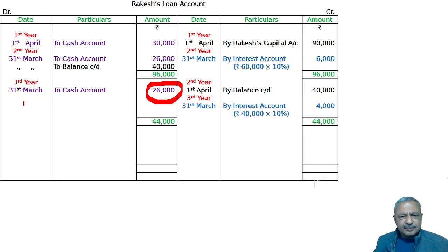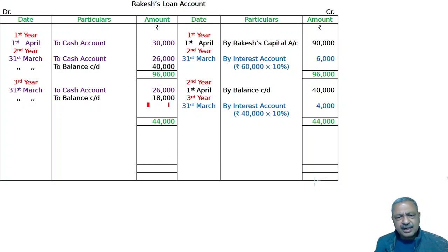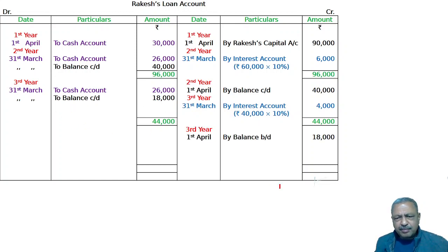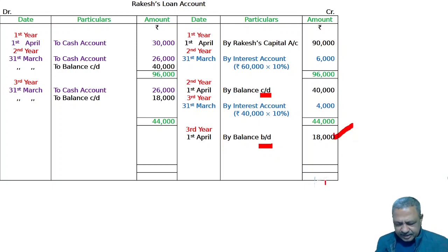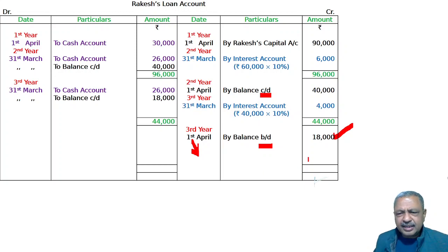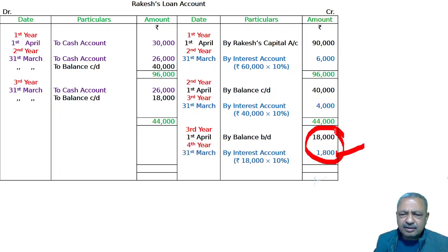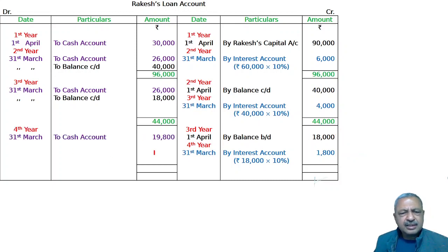Third year, on this date, balance carried down is 18,000. By balance brought down — 18,000. At 10% interest, fourth year, 31st March — third year. April to March: 2 years. By interest account 18,000. This is all about your answer — you should know the number of years.